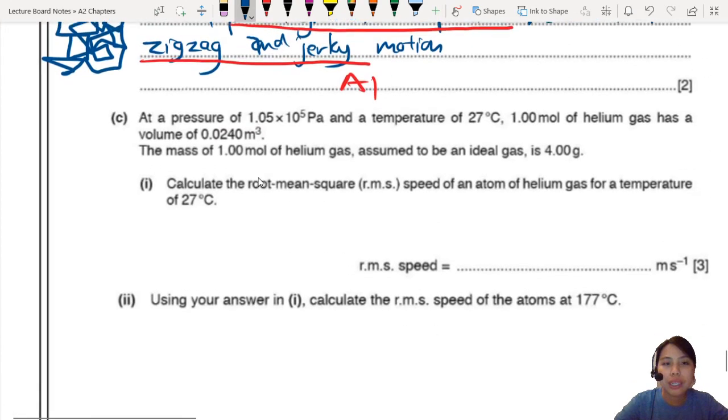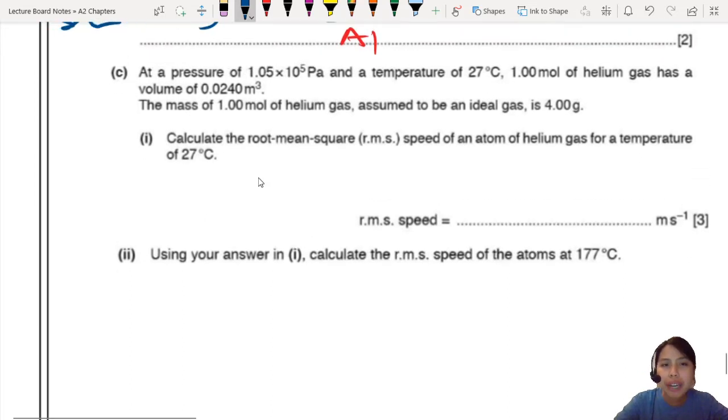Alright. So, calculation. Let's finish this. At a pressure and a temperature, 100 mol of helium gas. So mole, we usually use the symbol small n, has a volume V of that. It's very small. The mass of 1 mole of helium, assumed to be ideal, is 4 grams. Be very careful when you say, oh, 4 grams is the M. No, no, no, no. Wait. The M that we use in the equation is for 1 particle. This is a lot of particles. 4 grams of particles. So, I guess you could call this big M.